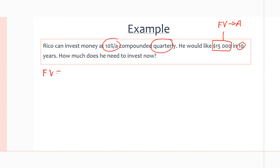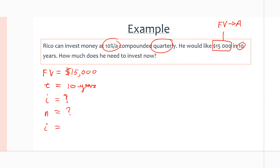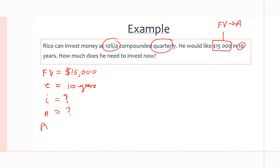The question is asking us for our present value. We have our future value that we need to reach: FV equals $15,000. We have our interest rate which we need to calculate, and our time in years is 10. We also need to calculate our number of compounding periods N, since we don't know those yet. So let's first calculate for i, and of course we also want to find present value.